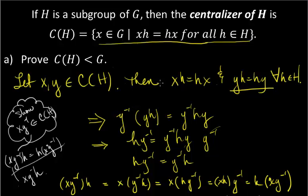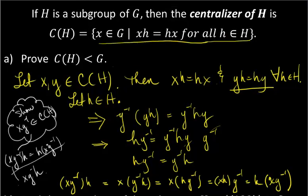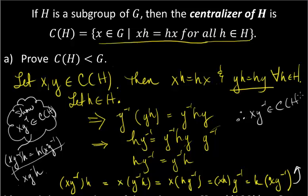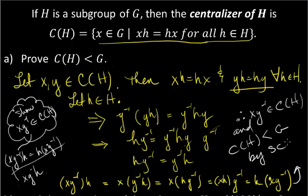Let me make a little correction here — let X and Y be in here, and let H be in H; I didn't say where we were getting that. So H is any element of H, meaning it represents all elements. We can conclude, therefore, XY inverse is in the centralizer of H, and the centralizer of H is a subgroup of G by the subgroup criterion test.